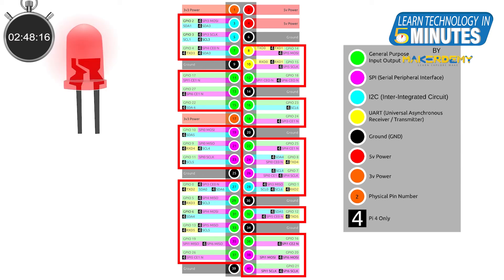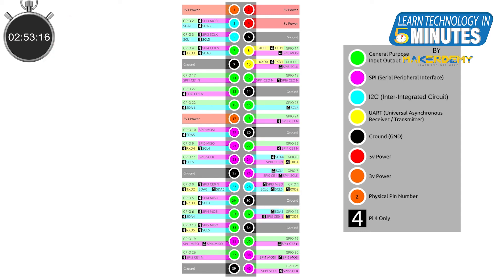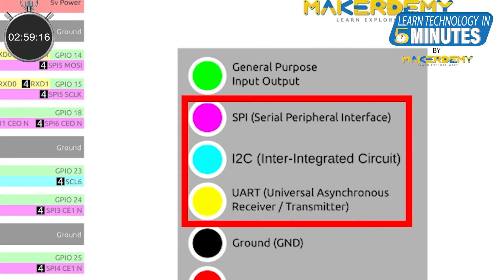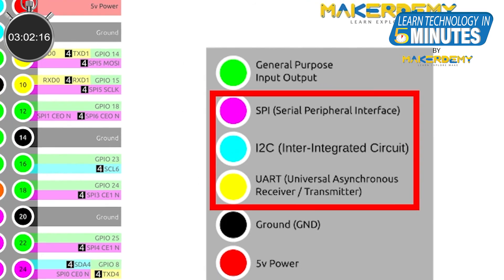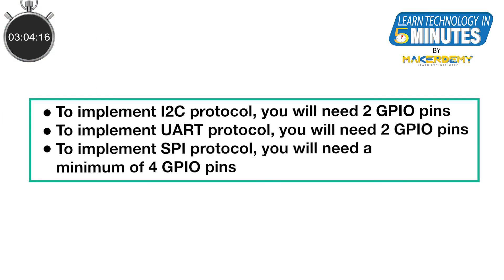Sometimes you will need to do more than just switching on or off the pins. Most of the GPIO pins come with a secondary function that allows them to interface with different kinds of devices like I2C, SPI, and UART devices. For I2C and UART, we will need 2 GPIO pins, whereas for SPI, a minimum of 4 GPIO pins are needed.